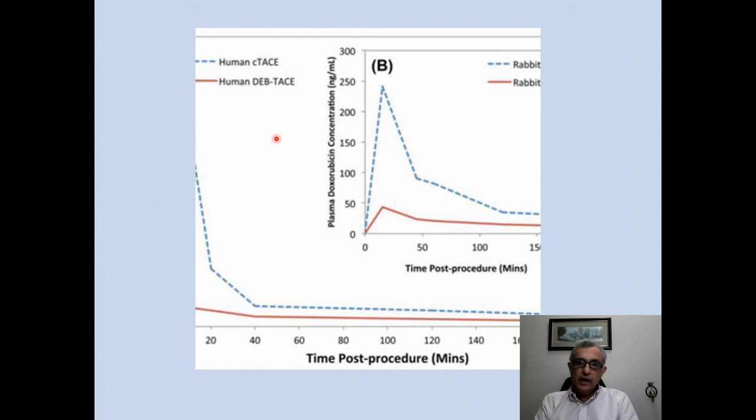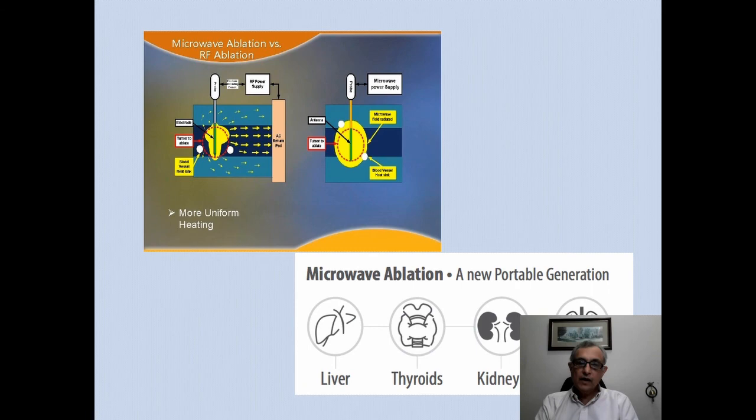If we look at drug release into the circulation over time, conventional TACE releases a significant amount of chemotherapeutic agent into the systemic circulation compared to drug-eluting beads. Consequently, the systemic toxicities of conventional TACE are much higher than those of drug-eluting beads, though long-term outcomes of conventional TACE compared to drug-eluting beads are quite similar.